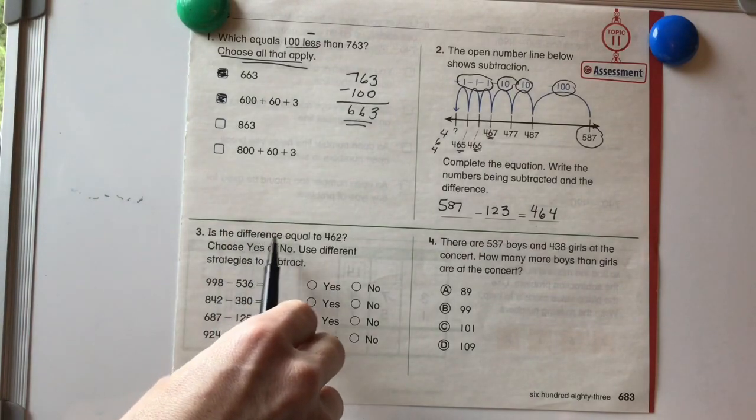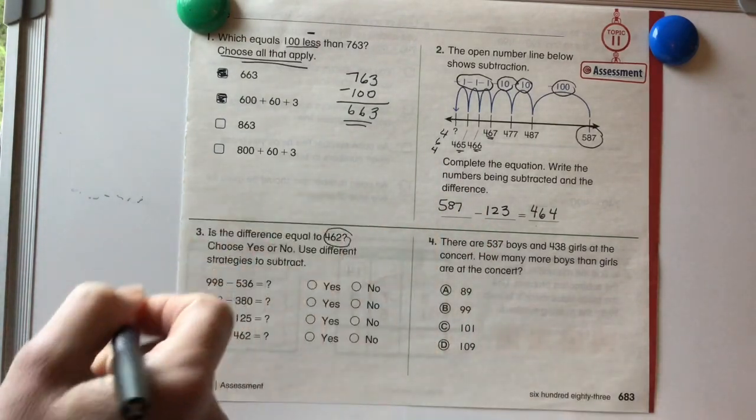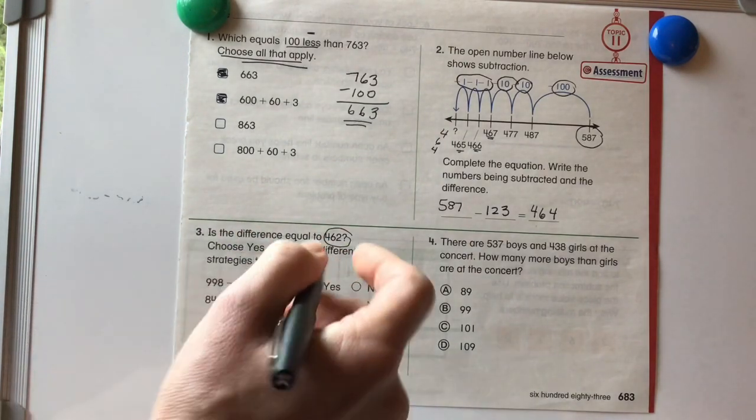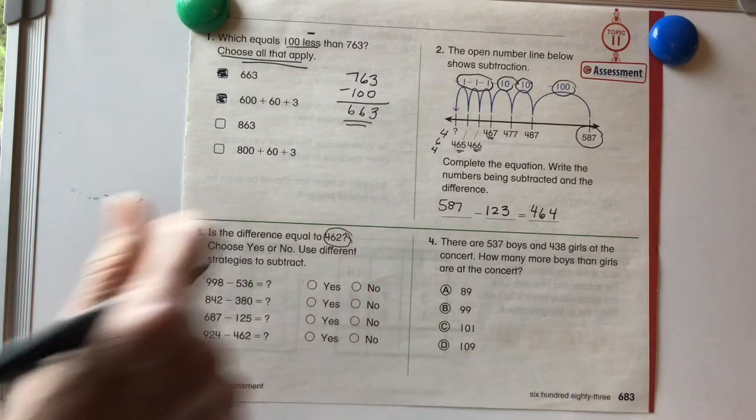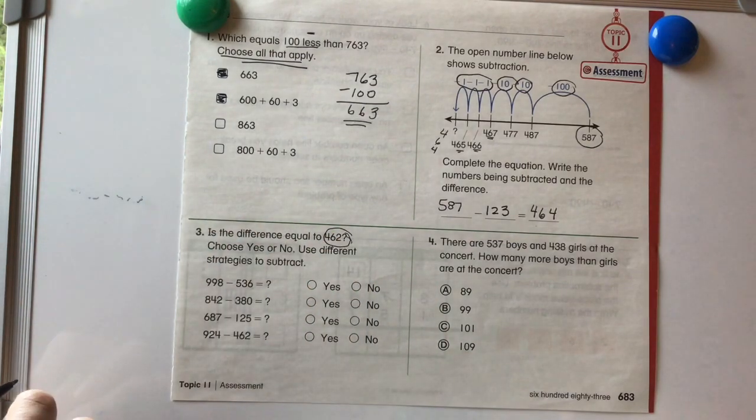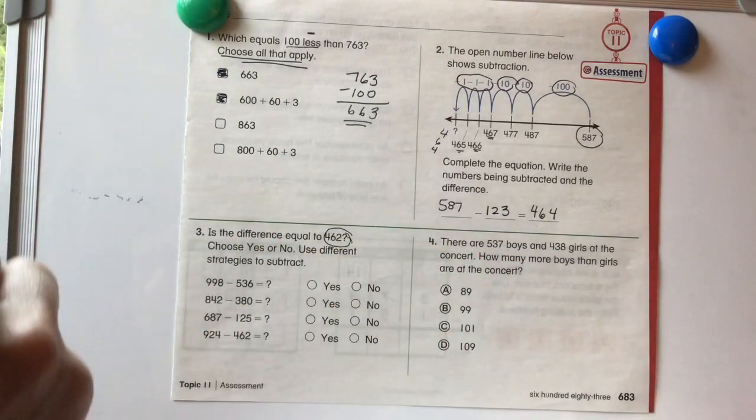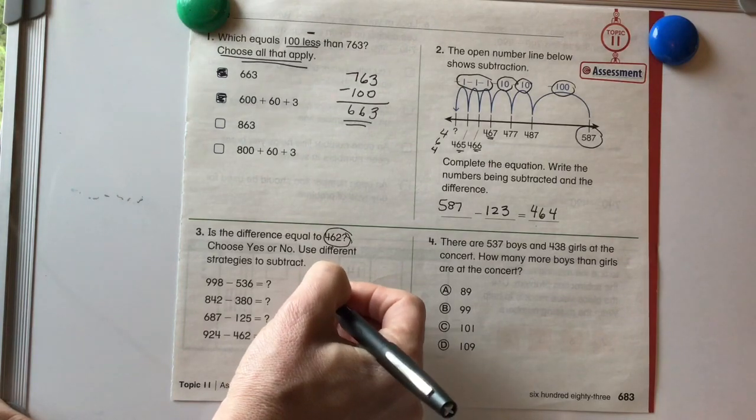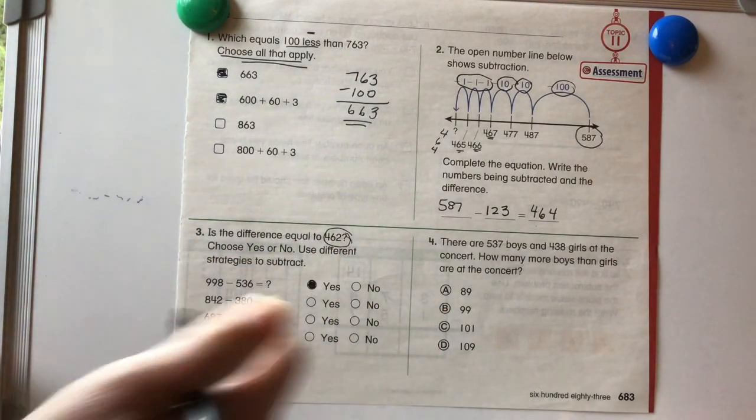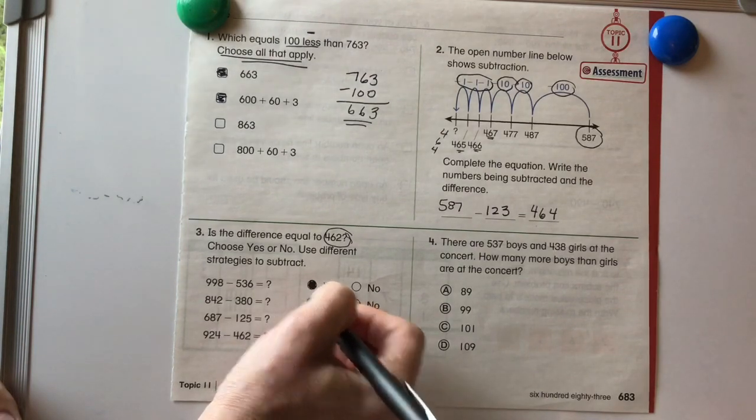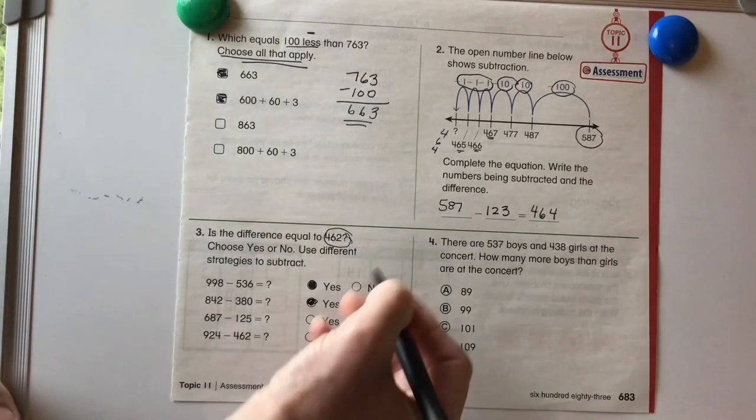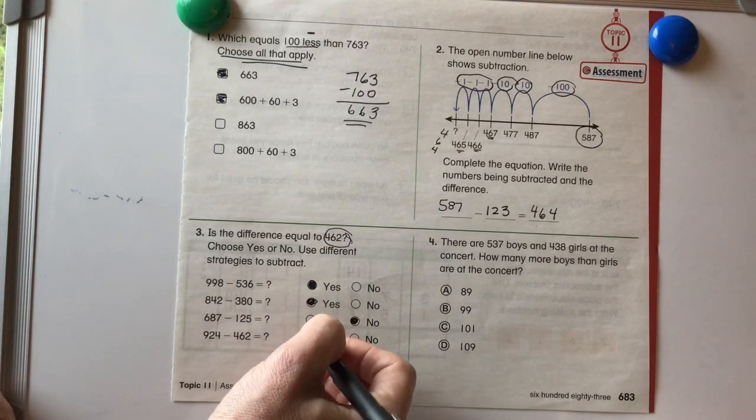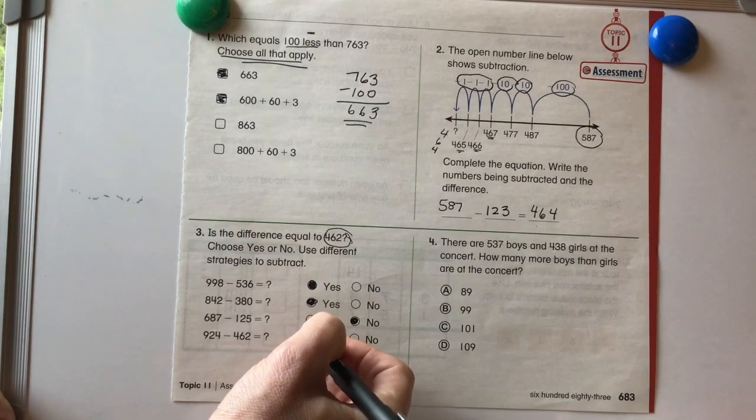Number three. Is the difference equal to 462? Choose yes or no. Use different strategies to subtract. So you're going to go through and see which ones are equal. Which ones equal 462? And you can do whatever strategies you would like to subtract. But we know this one is equal to 462. This one is equal to 462. This one is not. And the bottom one is.